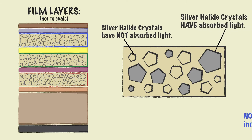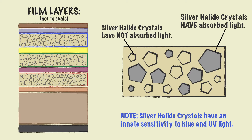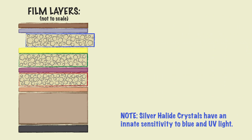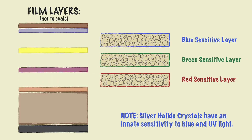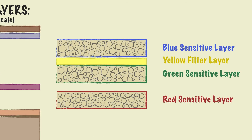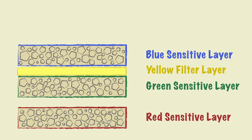It's important to know that these crystals have an innate sensitivity to blue and ultraviolet light. Because of this, the blue sensitive layer is placed at the top. Next there are the green and red sensitive layers. But since silver halide is always naturally sensitive to blue, any remaining blue light that was not absorbed by the blue layer must be removed. This is achieved with an extra yellow filter placed directly below the blue sensitive layer.